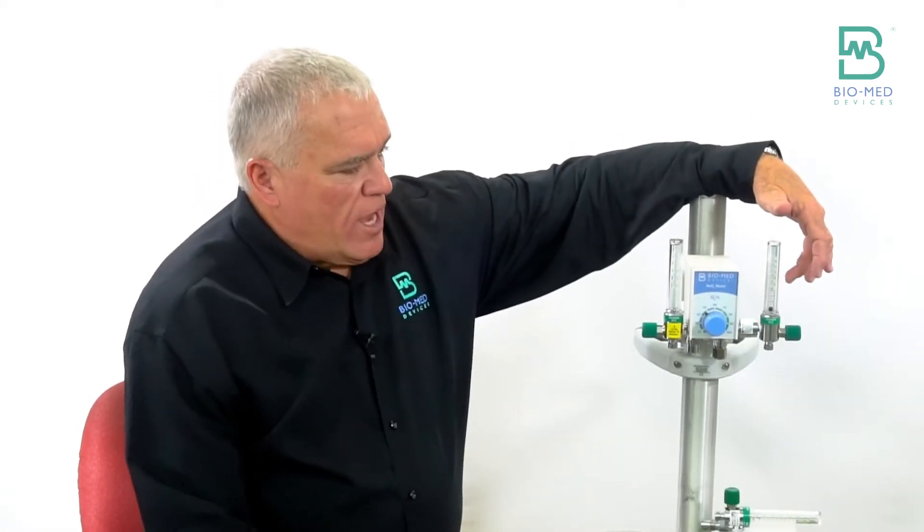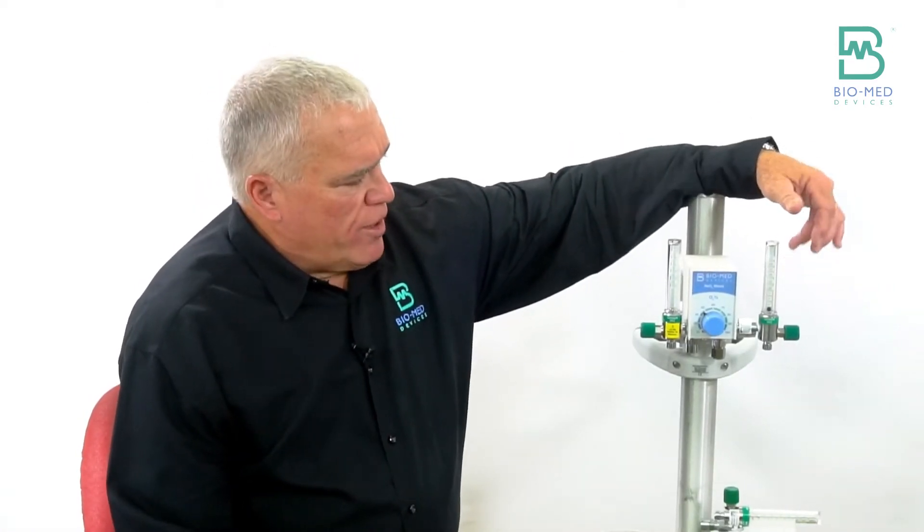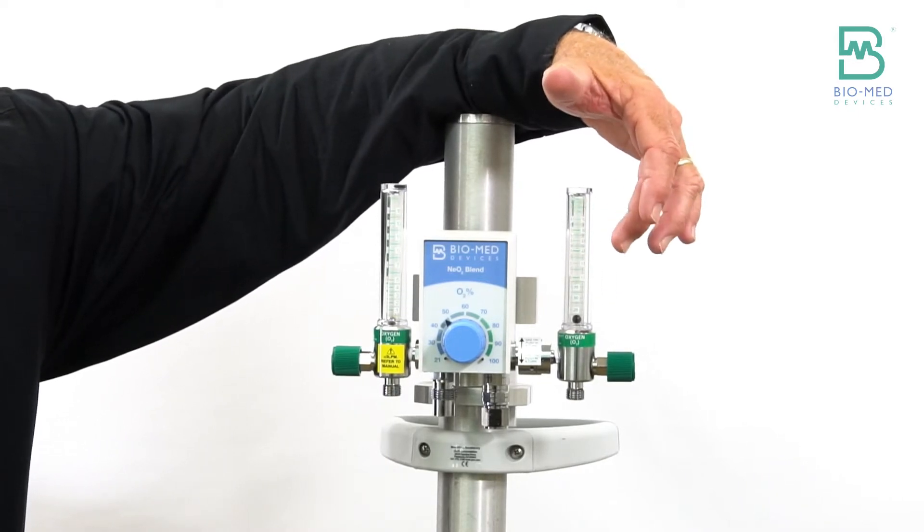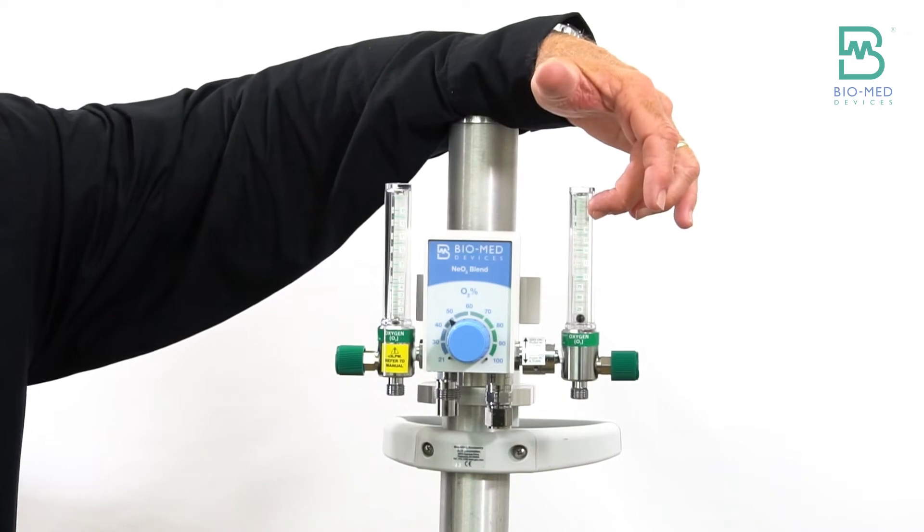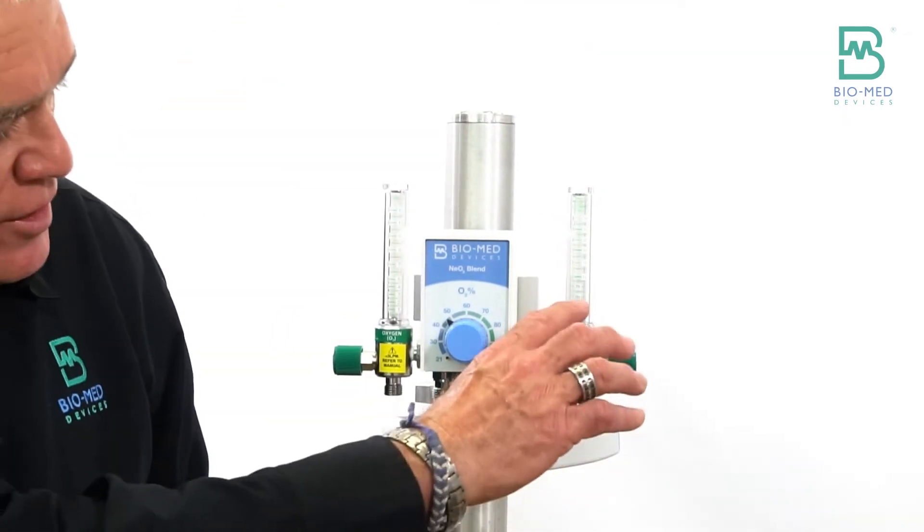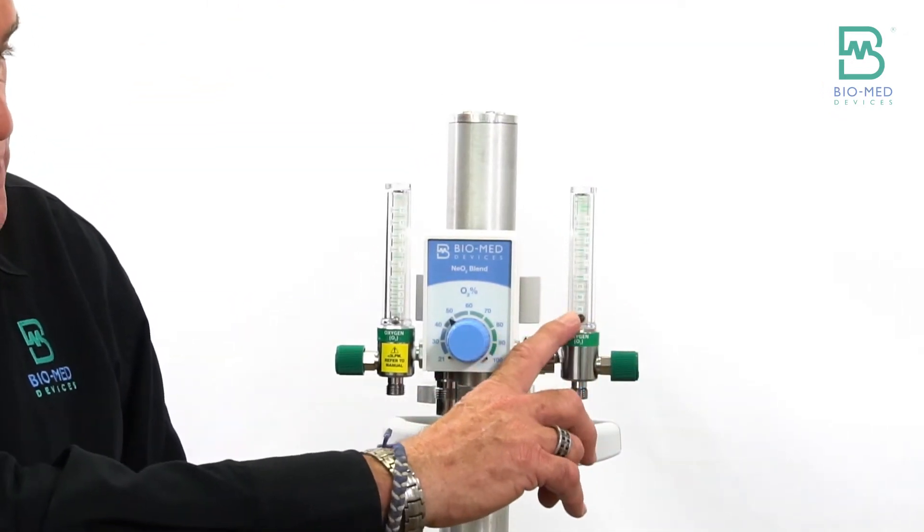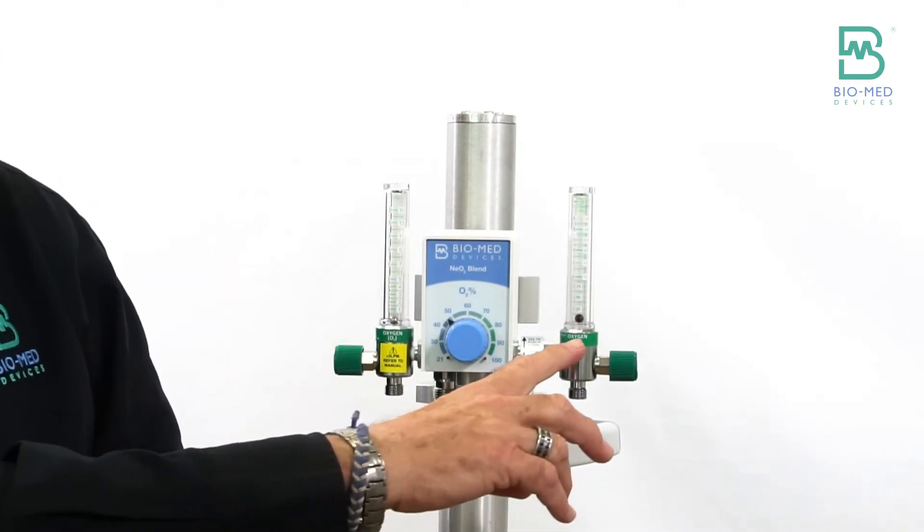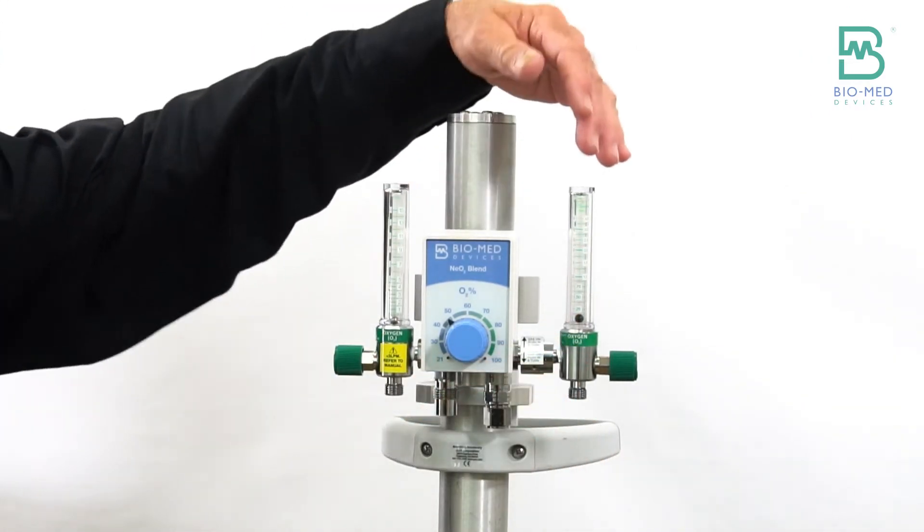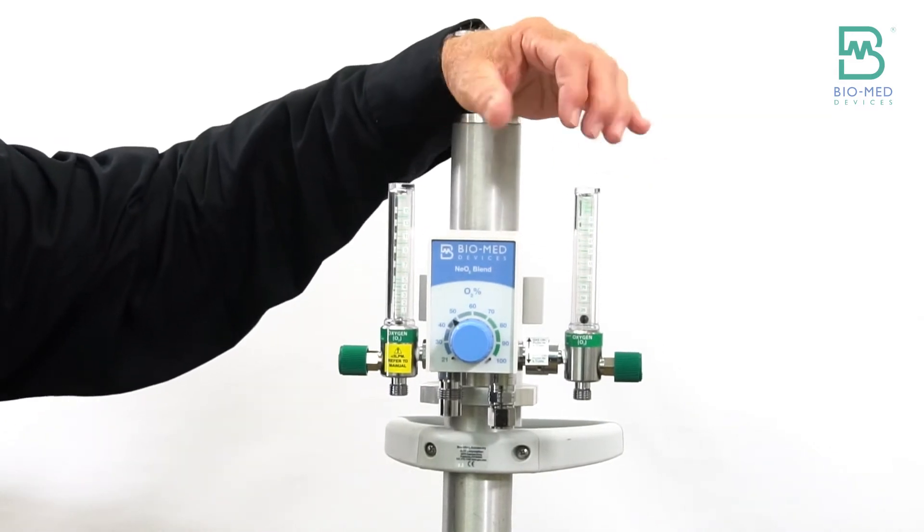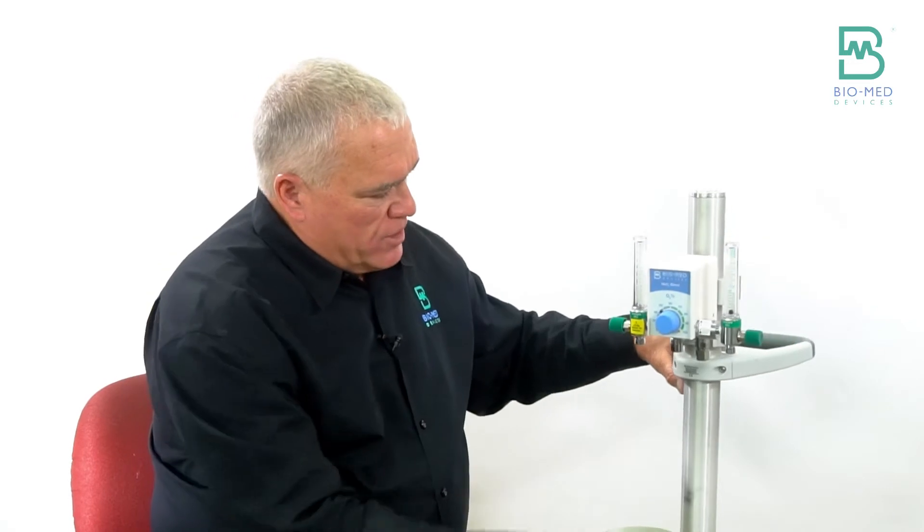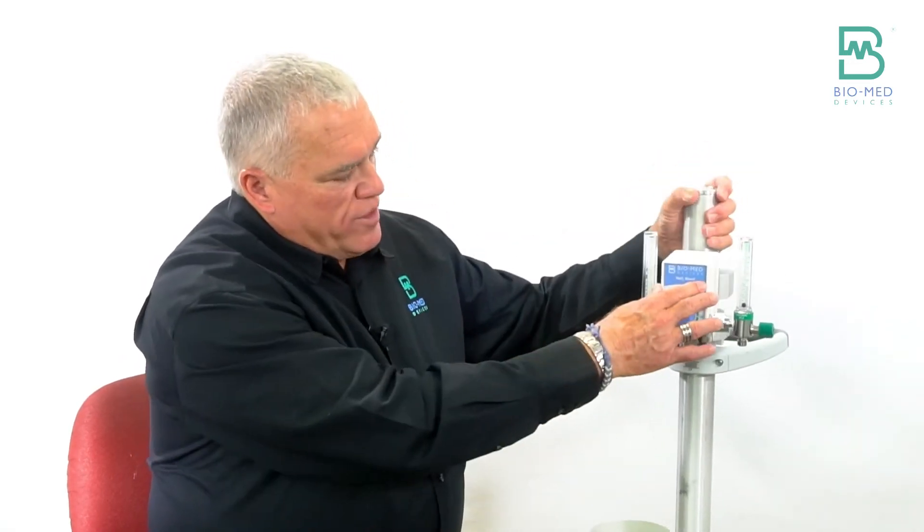On this side we actually have three different options. You can go with zero to fifteen liter, zero to three and a half, which is on here now. You can still dial in the accuracies down to say an eighth of a liter if need be. And then we have a zero to one liter for people that really want to be accurate with those low flows.